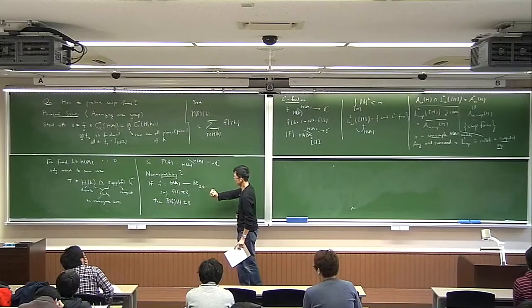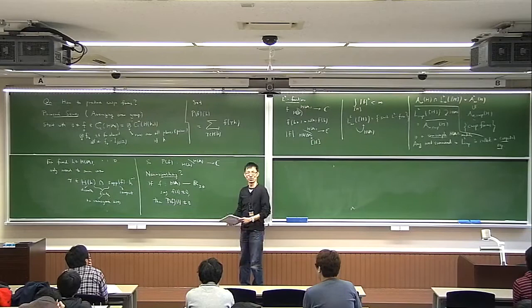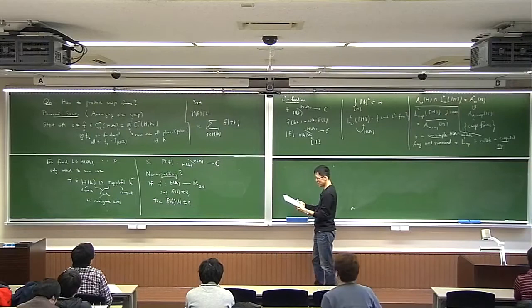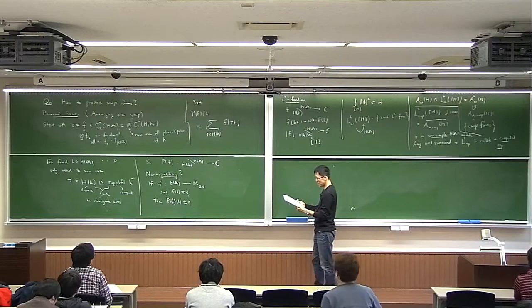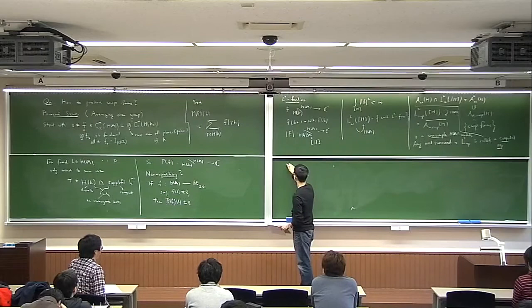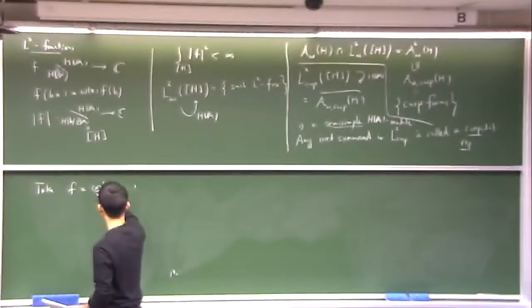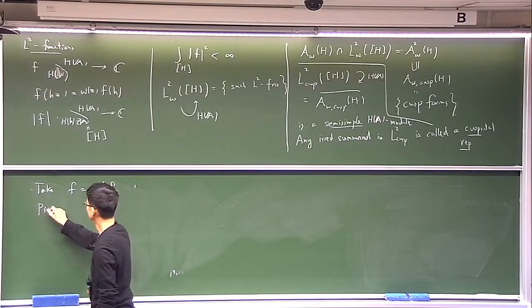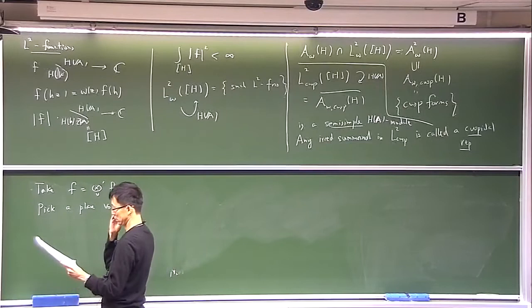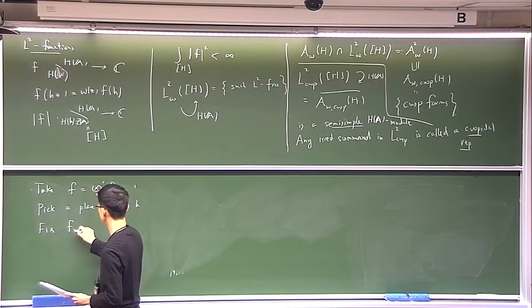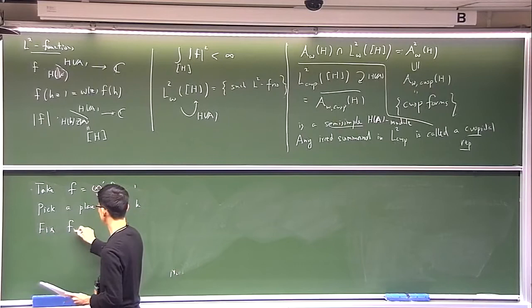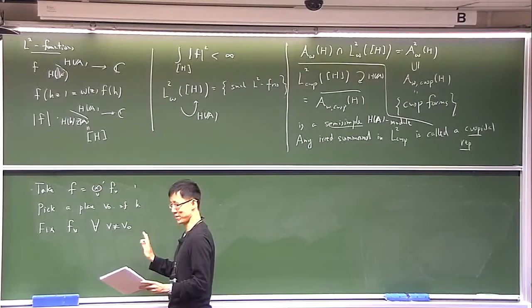Another question we haven't discussed: even if this were non-zero, why is it cuspidal? Cuspidality has a condition of vanishing constant terms, which we haven't checked. So here is another way of checking non-vanishing. Let's take this F as before, and suppose you pick a place V_0 of k and fix it. Then you fix F_V for all V different from V_0, where at V_0 you still maintain some freedom. At V_0, I'm going to let F_{V_0} be the characteristic function of some compact open neighborhood of the identity element.